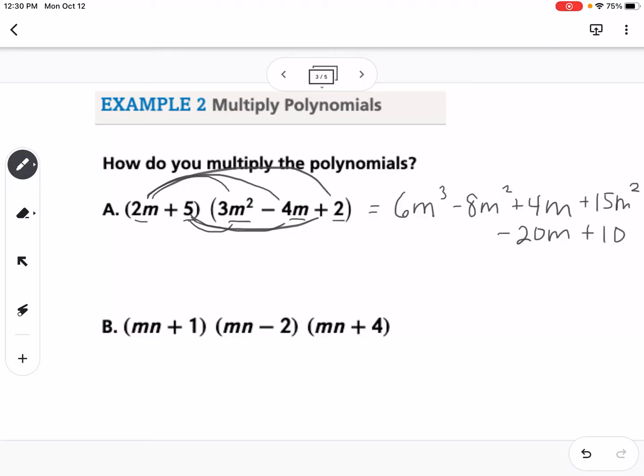So then we combine like terms, so my answer would be 6m cubed. Then I have a negative 8m squared and a 15m squared, which would be 7m squared. And then I have a 4m and a negative 20m, so that would be minus 16m plus 10. That's what I get when I multiply it out.